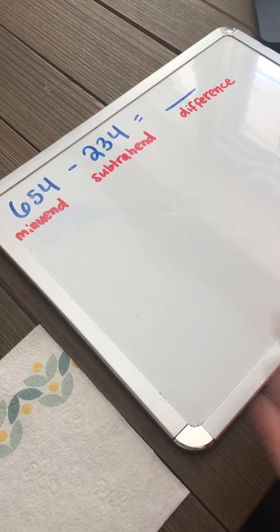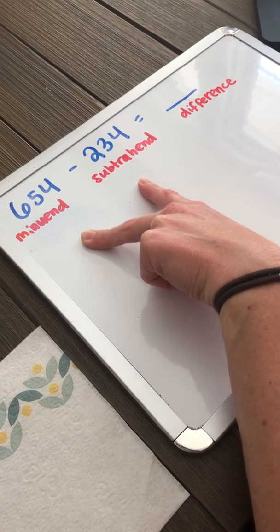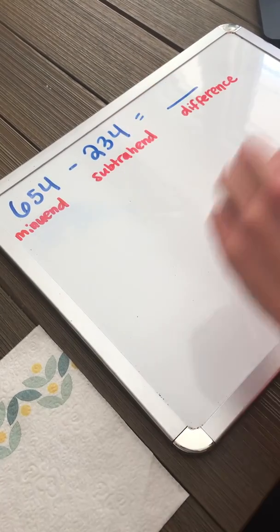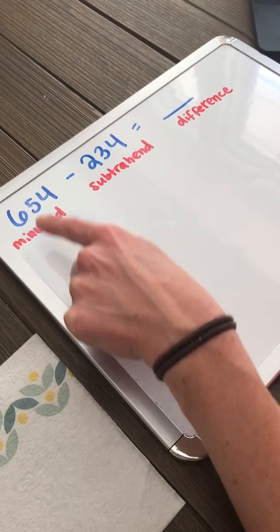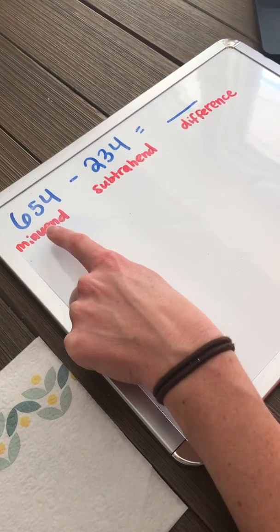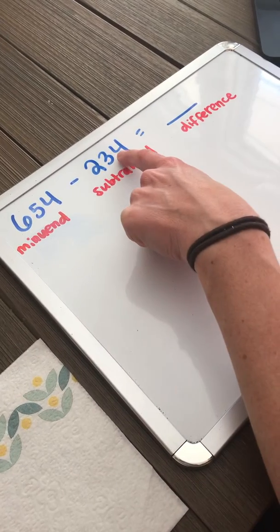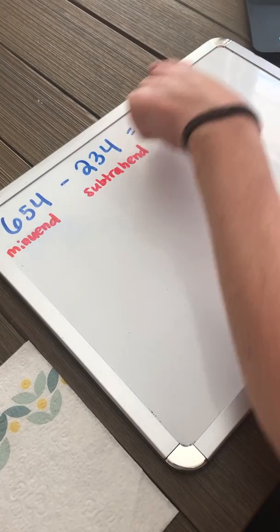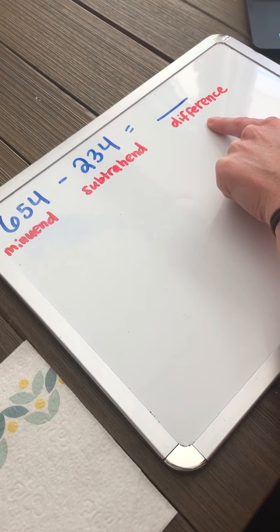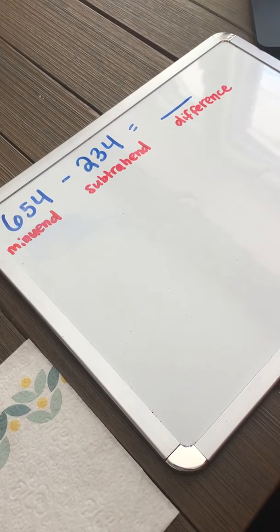Today we're going to be subtracting two numbers within a thousand. We are going to be using the same methods of drawing the base-ten blocks and expanded form, but before we do that I want to go over some quick vocabulary. We're starting with a minuend in a subtraction problem. The number that we're taking away is called the subtrahend, and our answer in subtraction is called the difference. You will hear me use these words in this video, so I wanted to go over that first.